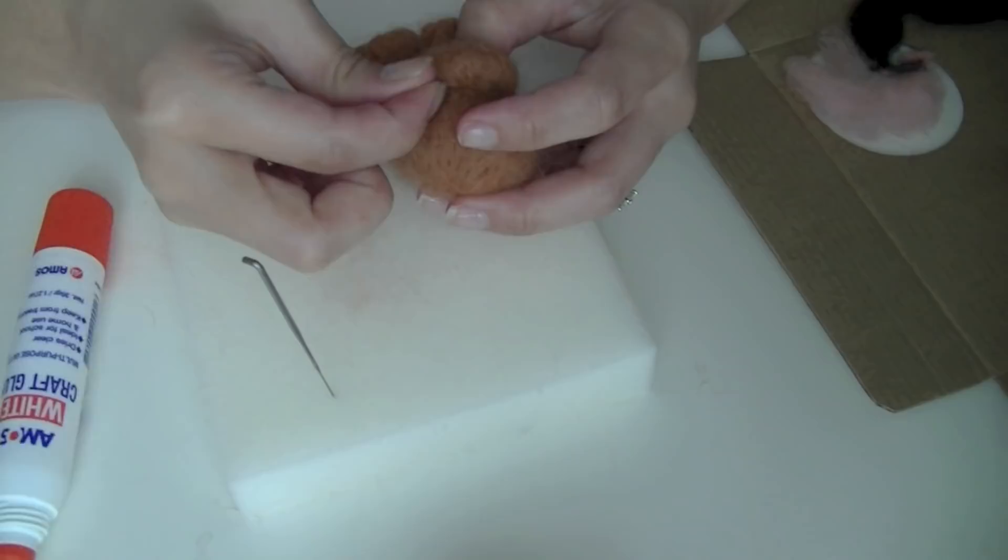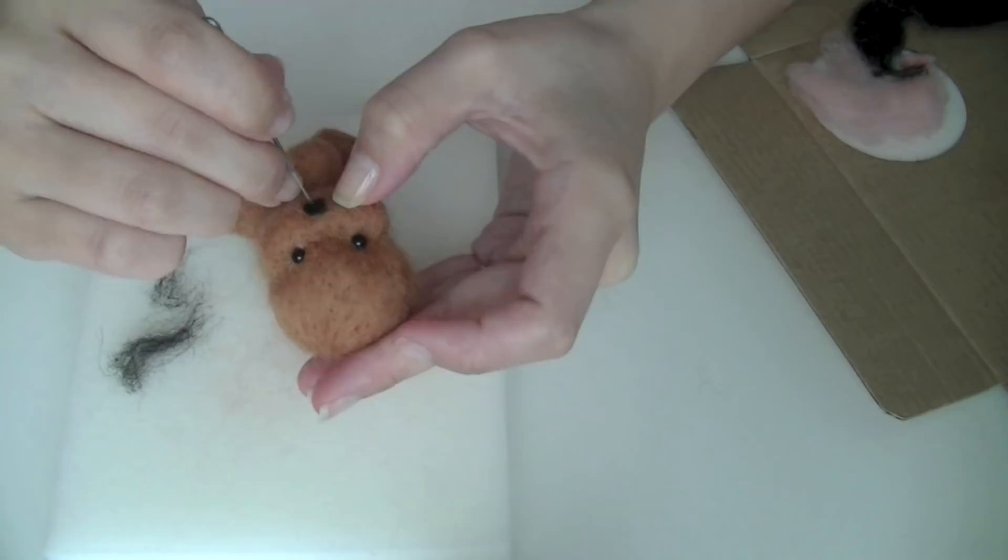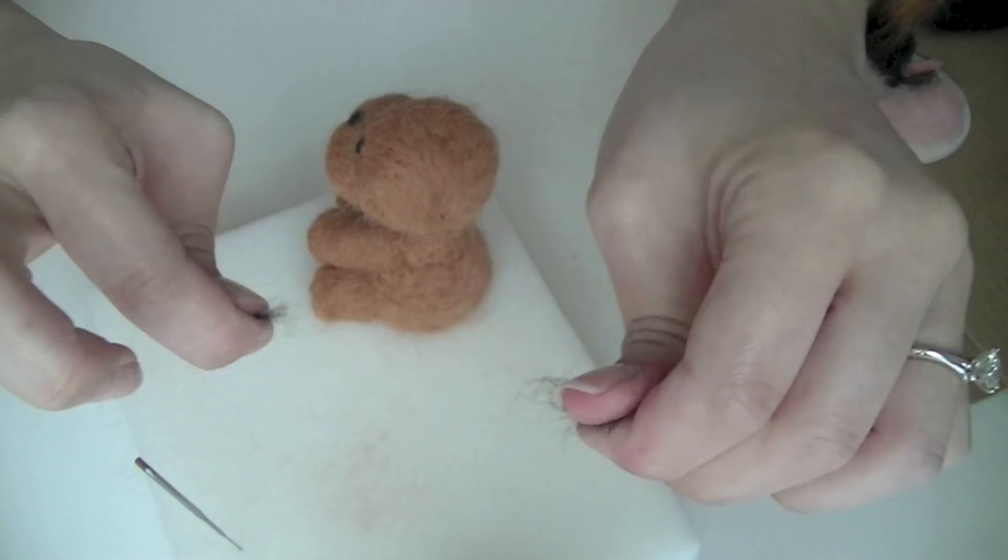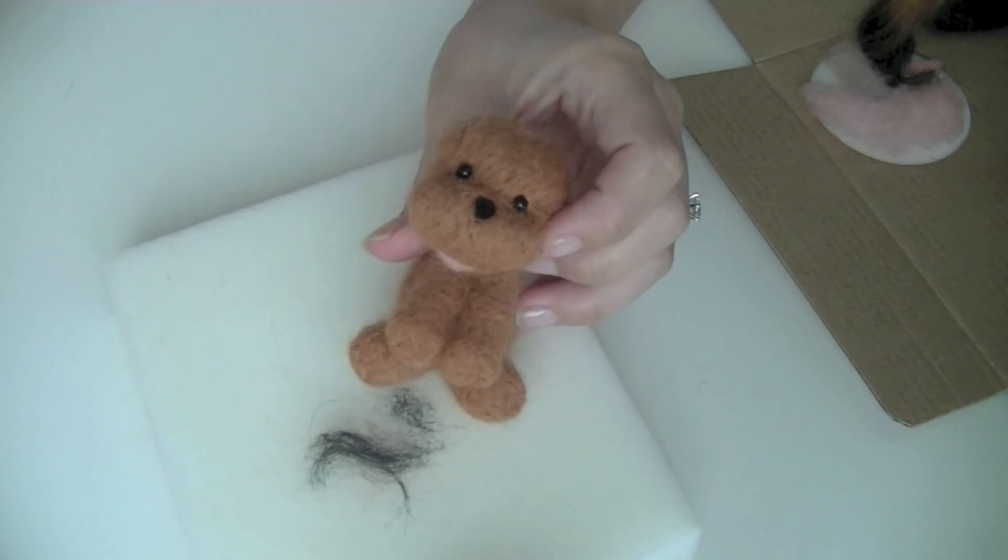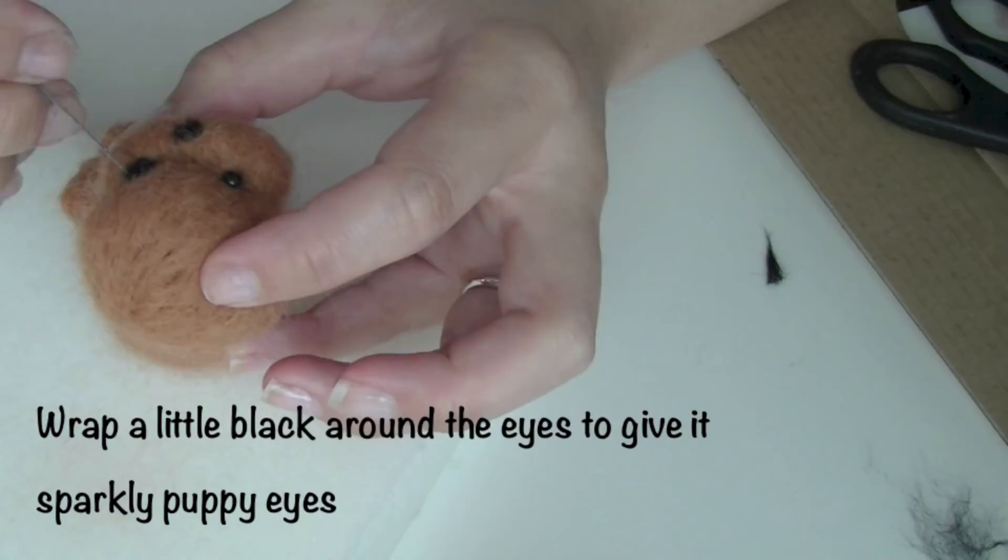Grabbing the black felt, I'm going to roll into a little ball and position the little nose. Now again, I'm just going to prick it. And while I'm pricking, I'm going to manipulate it so it looks more like a dog nose. So kind of like an upside down triangle. And taking more of that felt, roll in my fingers and I'm just going to prick this around the eyes. So it makes the eyes look more puppyish and more sparkly and innocent.